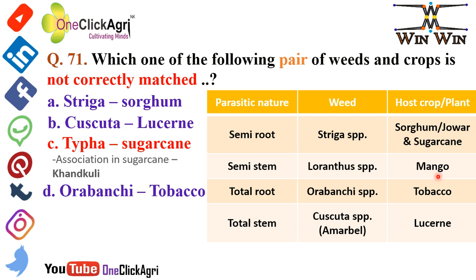Continuing the parasitic weed chart: total root — Orobanche species, parasitic on tobacco; total stem — Cuscuta (also known as Amarbell), parasitic on lucerne. A memory trick: abbreviate the weed types as St, Rs, Rs and the weeds as S, L, O, C (like 'line of control'). The host plants/crops are then straightforward to remember from this mnemonic.